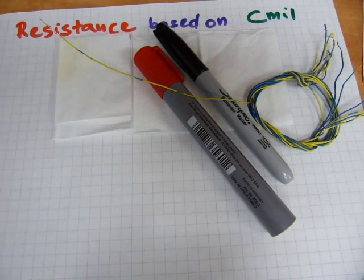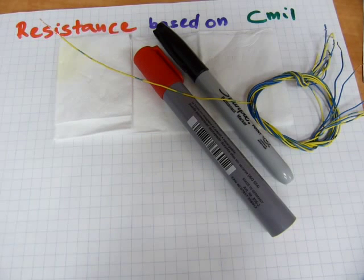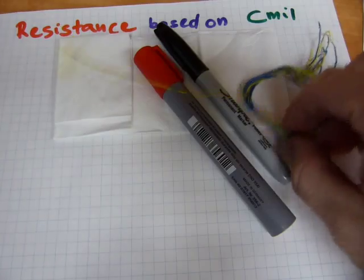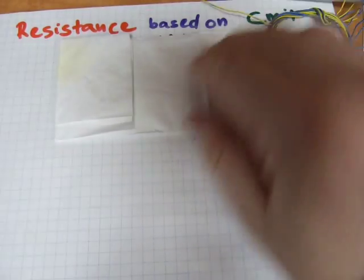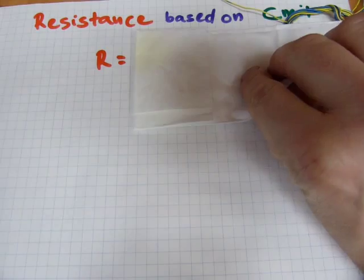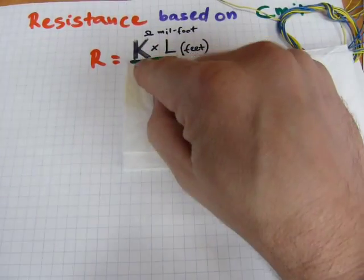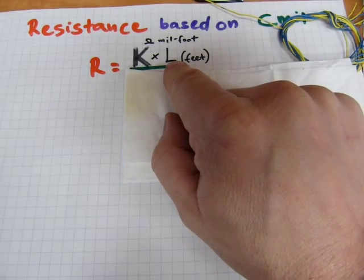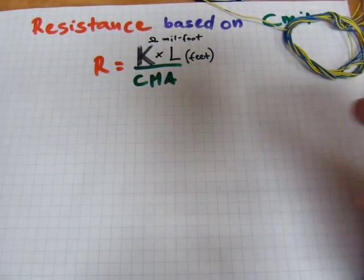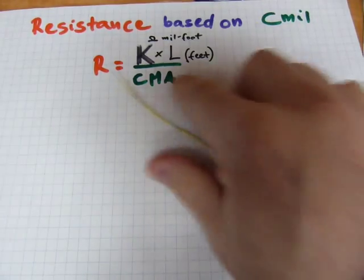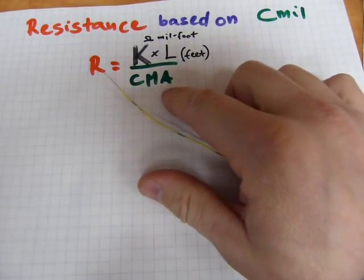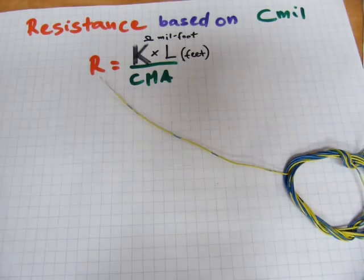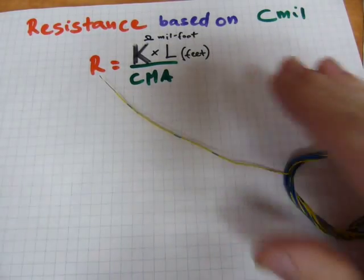The formula is essentially the same as with the metric calculations. I'll show you side by side here. The resistance is calculated by multiplying a K number with the length in feet and dividing by circular mills area. CMA stands for circular mills area.